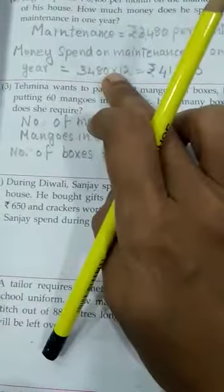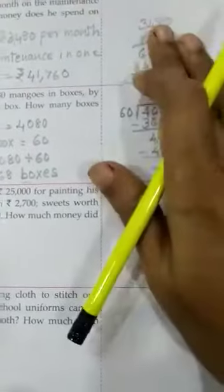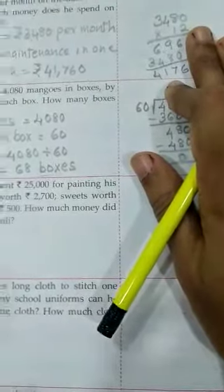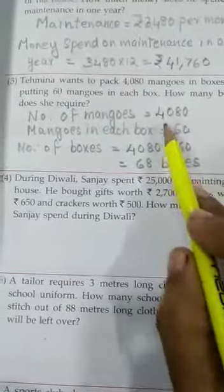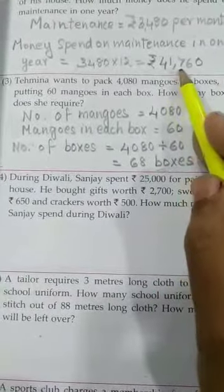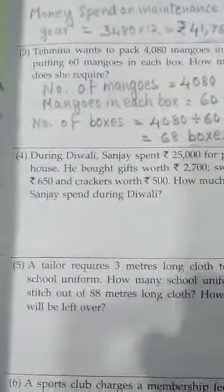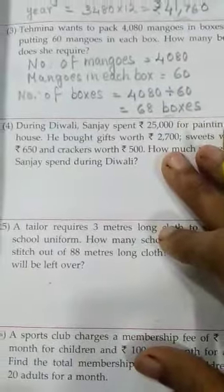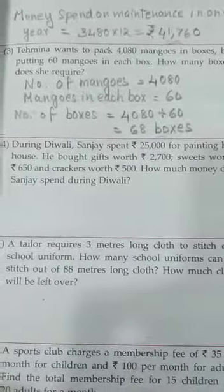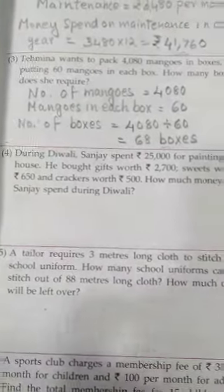Here, you will only write proper statements and answers — don't do the multiplication and write here; do all those on this side. Here, you will write only the proper statements and the final answer. Write proper statements and do problems 4, 5, and 6 in the textbook itself. There are more questions in Assignment 13 — more word problems to solve. We will do that next day. Till then, bye children.